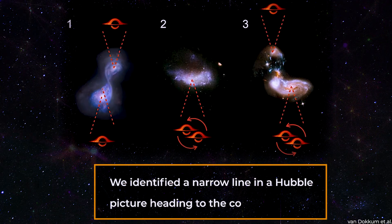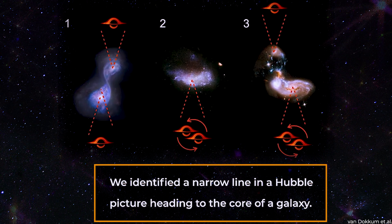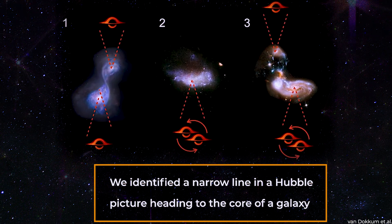We identified a narrow line in a Hubble picture heading to the core of a galaxy, Dokkum claimed.